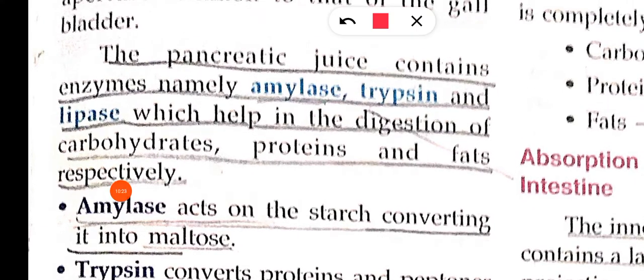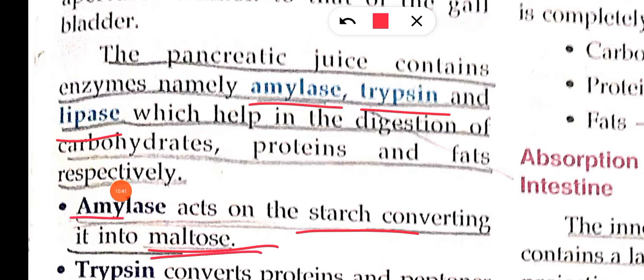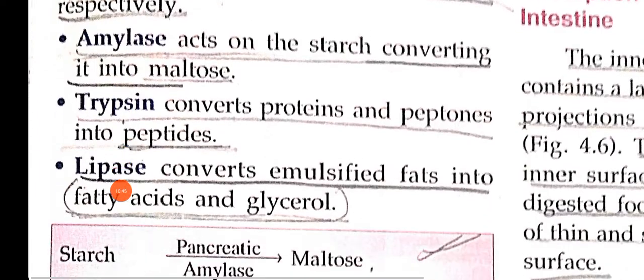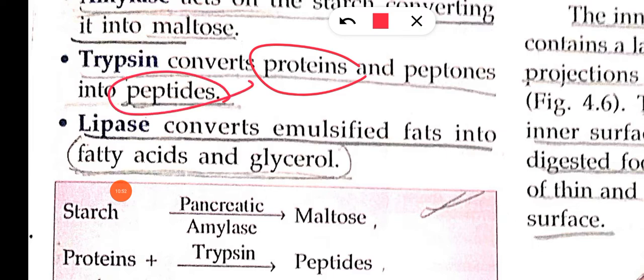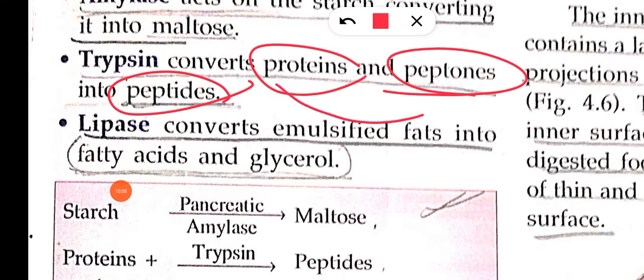The pancreatic juices contain three enzymes: amylase, trypsin, and lipase. Amylase converts starch. Trypsin converts protein into peptides. Lipase converts emulsified fat into fatty acids and glycerol.